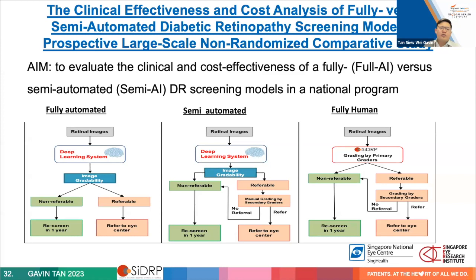We evaluated fully automated, fully human, and hybrid models. The hybrid was considered important because at that point the AI could determine whether referable disease was present or absent, but couldn't yet nail down severity with high confidence — and severity matters for prioritising referrals. In Singapore's public health system, demand pressures mean you must triage by severity and urgency to maintain the best outcomes.